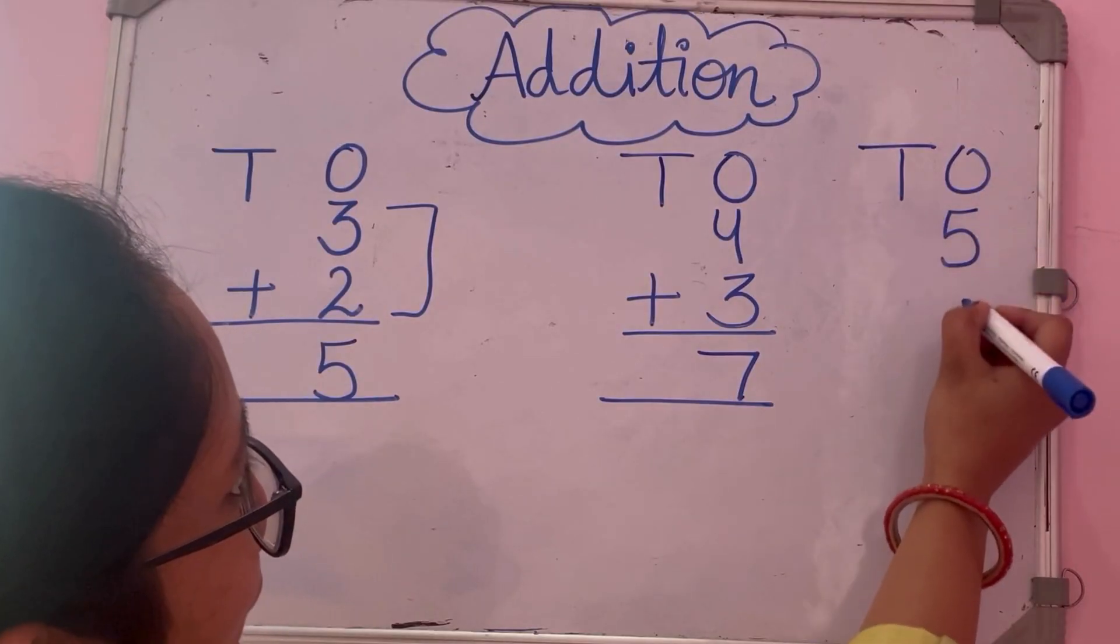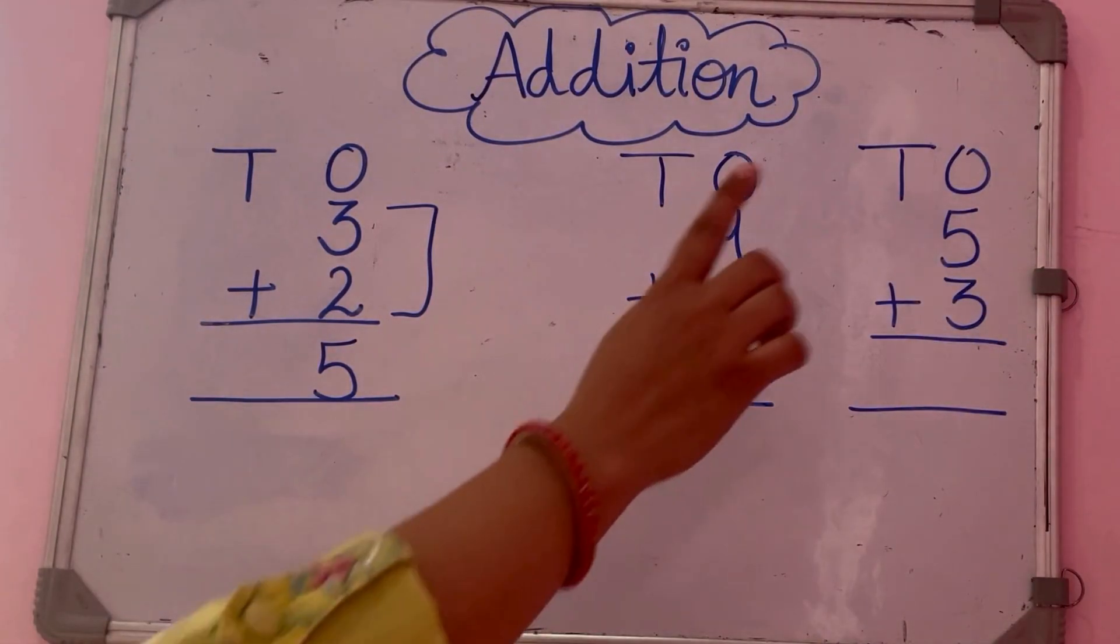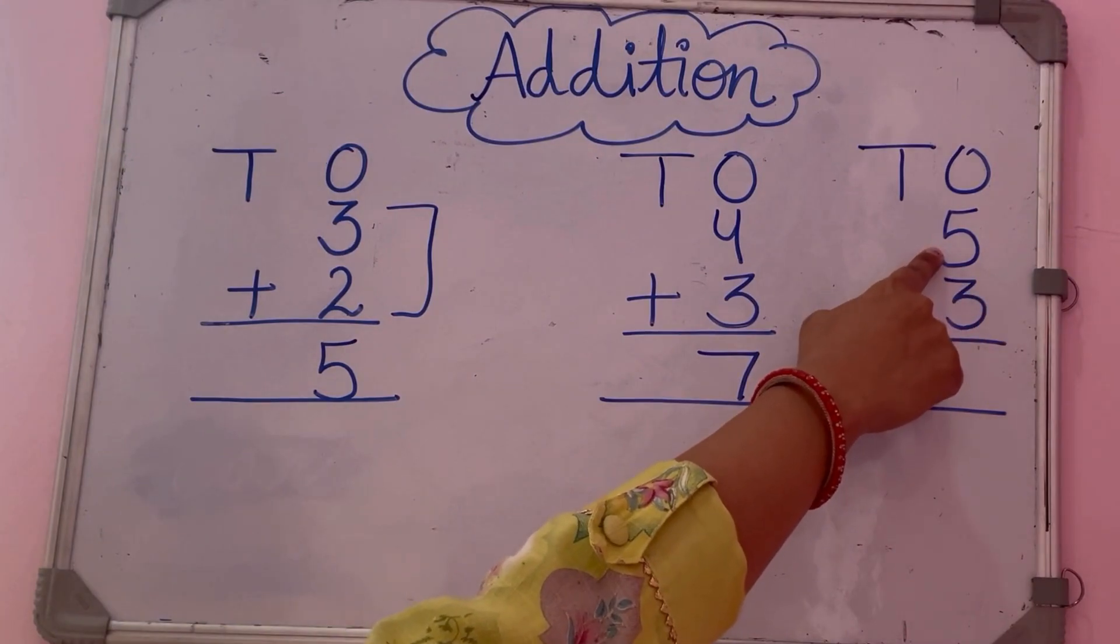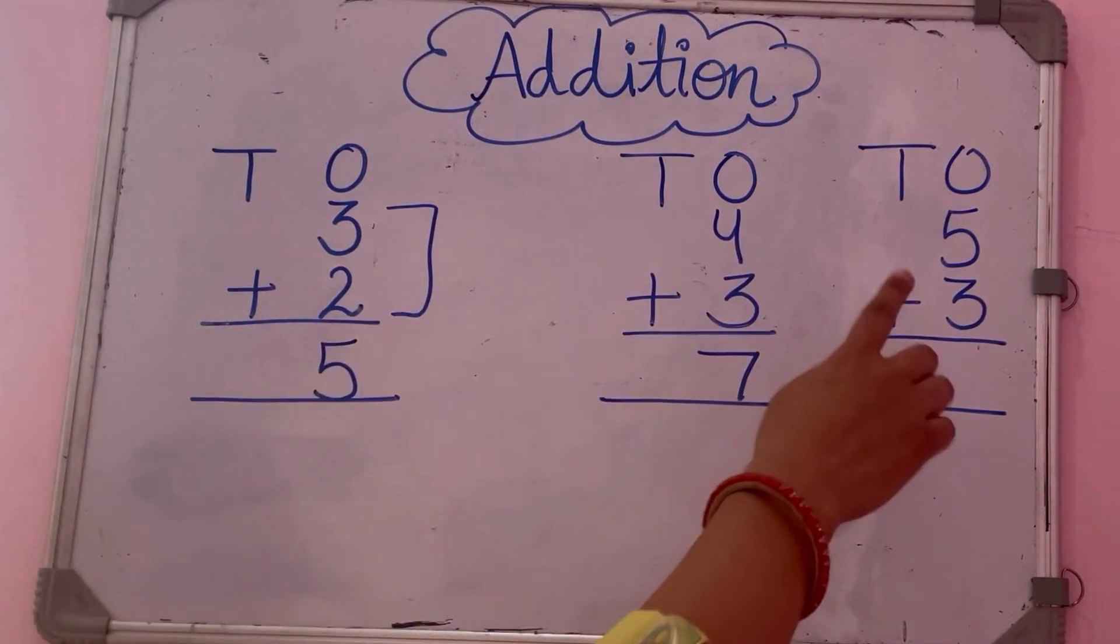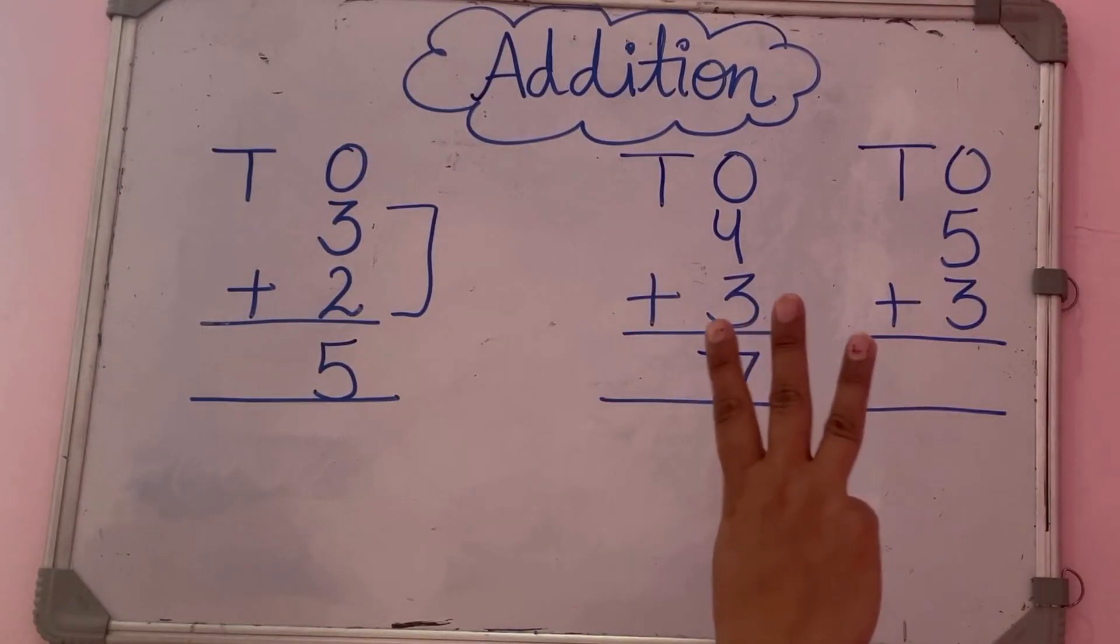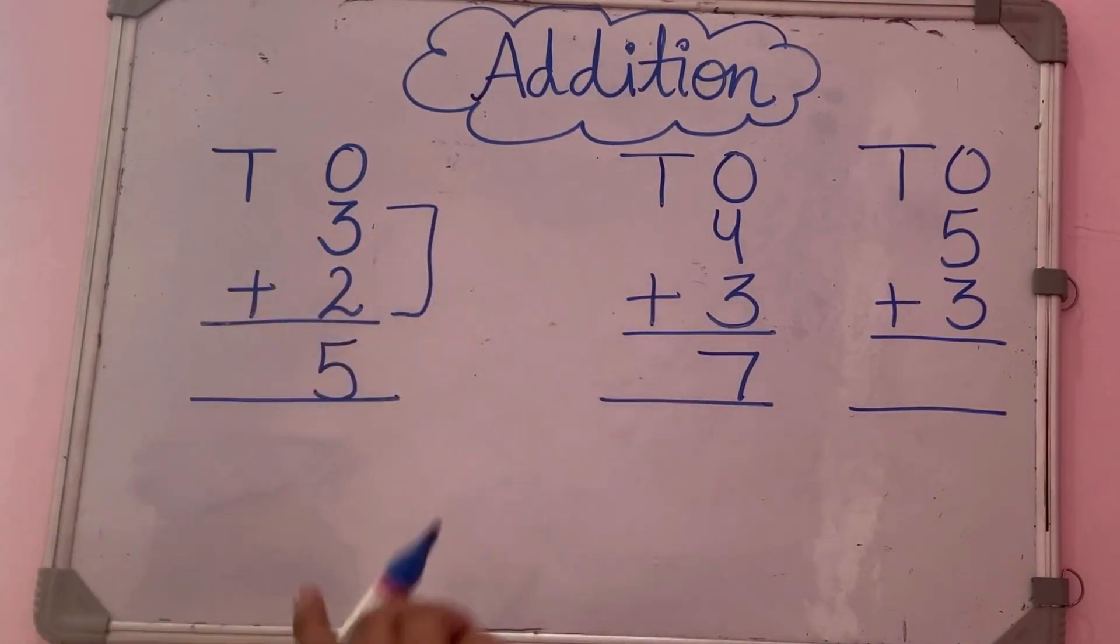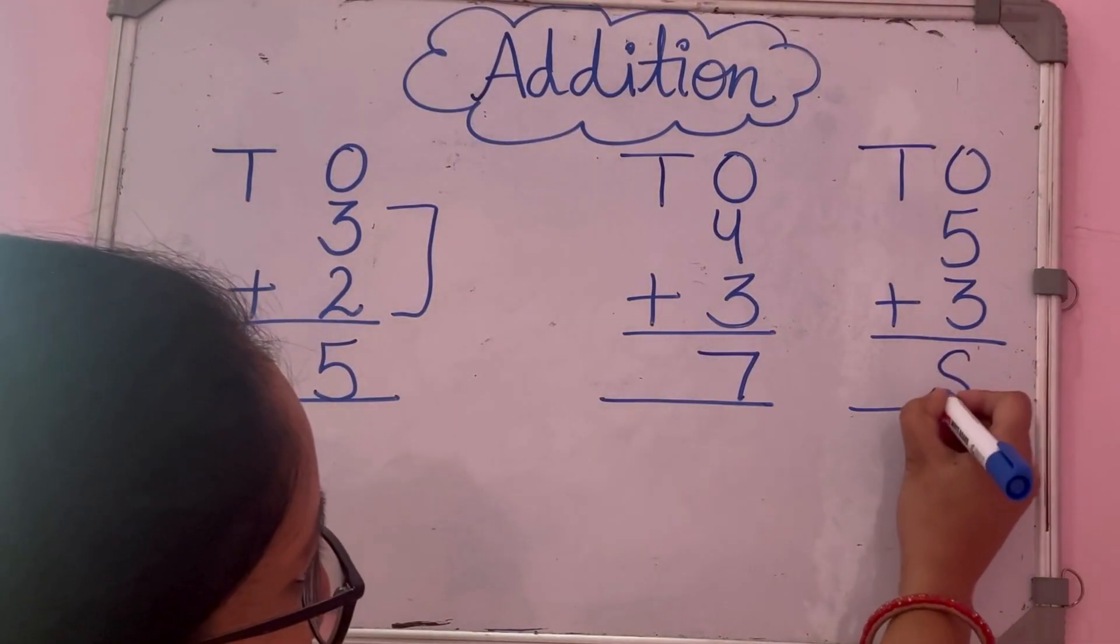Next is 5 plus 3. Again, the big number, number 5, we put in your mind. And number 3, we put on your fingers. After 5, we count: 6, 7, 8. Now 8 is your answer.